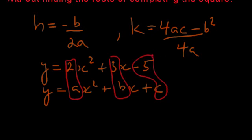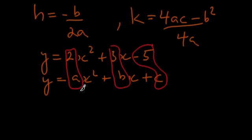Let's use our a, b, and c values and plug them into these formulas. Very quickly we'll have the vertex coordinates. Let's start with h. h = -b, and in this case b = 3.